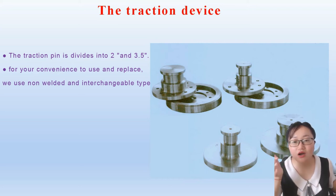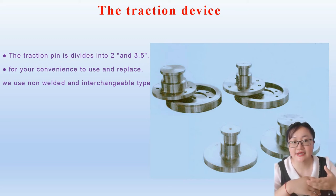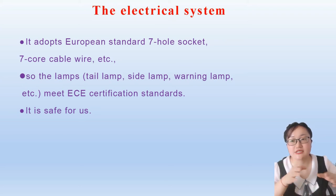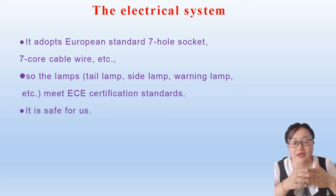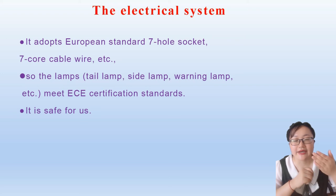This is our traction device, located at the front of the semi-trailer. The traction pin is divided into 2 inch and 3.5 inch sizes. For convenience of use and replacement, we use a non-welded and interchangeable type. The fifth wheel is matched with the traction pin. The electrical system also uses high-quality parts that meet ECE certification standards. Components like the side marker lamp, tail lamp, and reversing lamp are all certified.